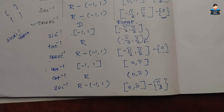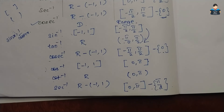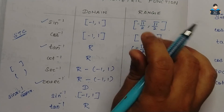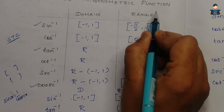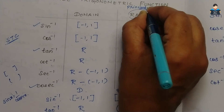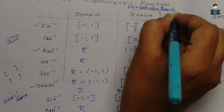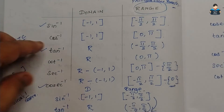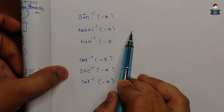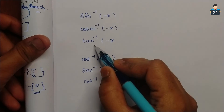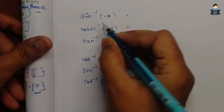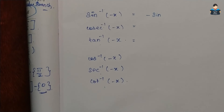This is my way of memorizing the table. Also note that sin inverse of minus x equals minus sin inverse of x, which is an important property to remember.